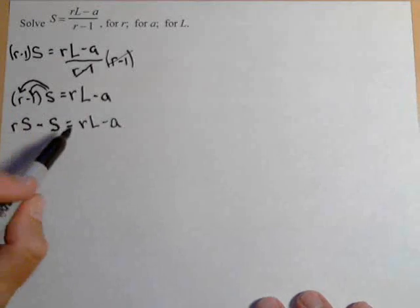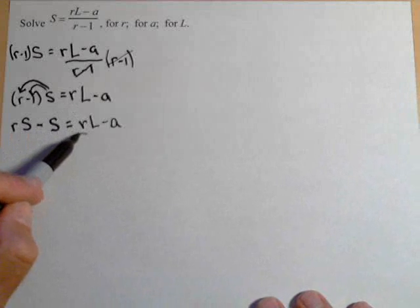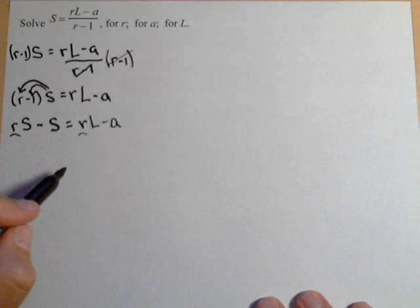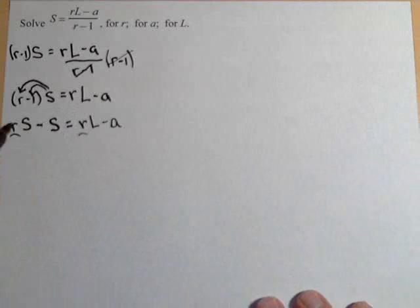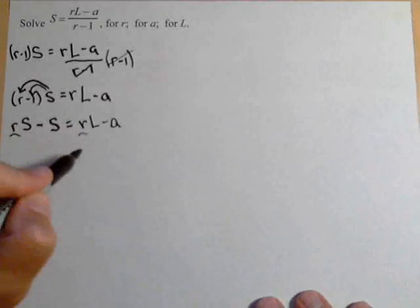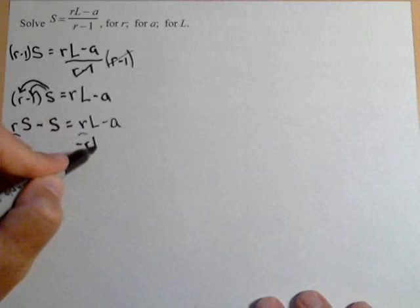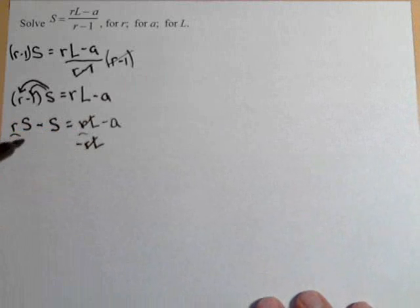Remember what we're trying to solve for. We're trying to solve for R. We have two of them in there. We need to get every term with R on the same side. So let's bring them over to the left-hand side. I'm gonna subtract RL from both sides.